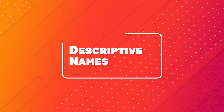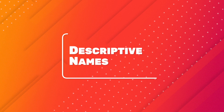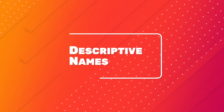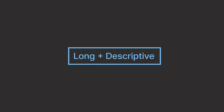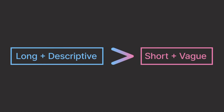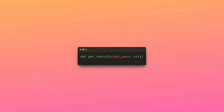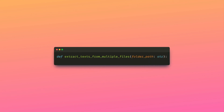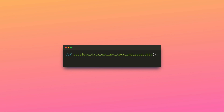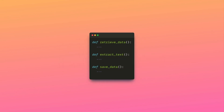A function's name should be descriptive enough for users to understand its purpose without reading the code. It's better to have longer, descriptive names than vague ones. For example, naming a function getText is not as clear as naming it extractTextFromMultipleFiles. However, if a function's name becomes too long — like retrieveData, extractText, and saveData — it is a sign that the function may be doing many tasks and should be split into smaller functions.